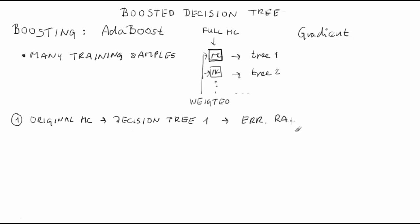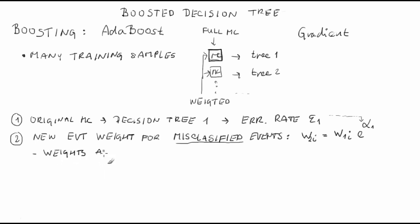The first decision tree is trained on the original sample. Determine the error rate epsilon_1 of the first tree. Each event, misclassified by the tree, is assigned a new weight. W_2i equals W_1i times e to the power of alpha_1. The event weights of the new sample are normalized so that their sum is the same as for the original sample. Build a decision tree on the updated sample.